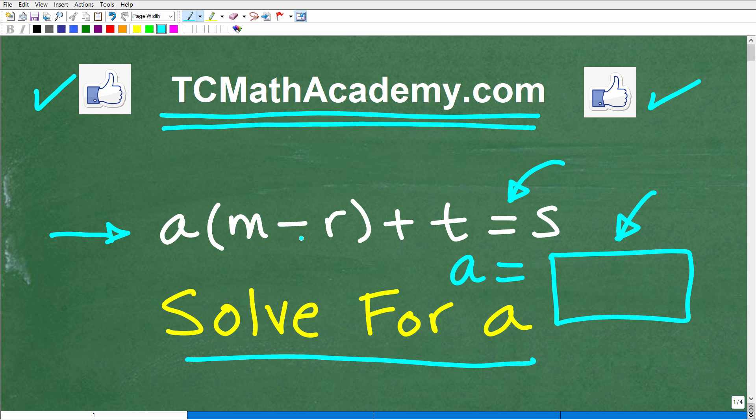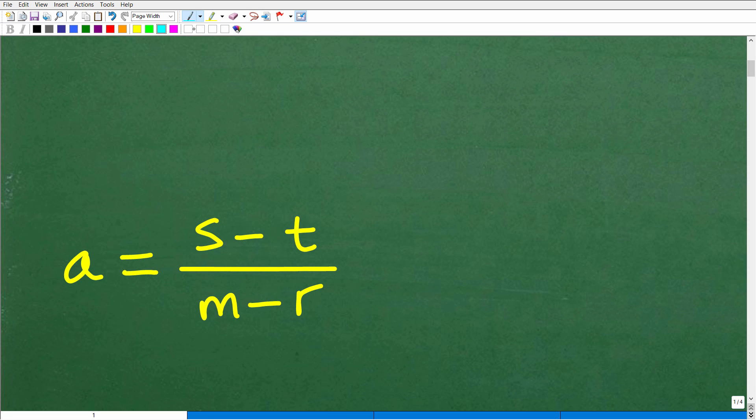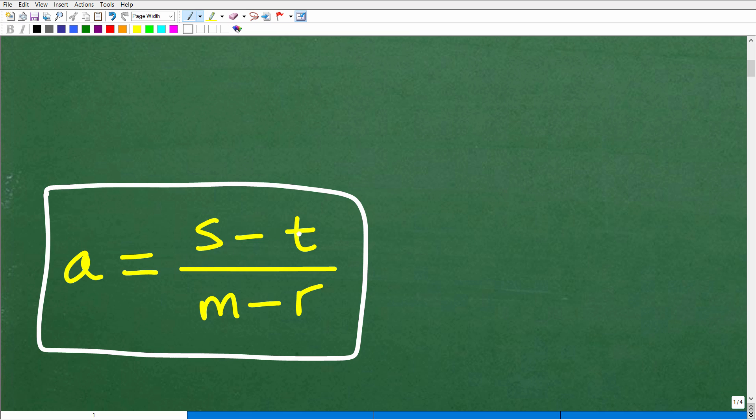Okay, so let's go take a look at the solution here. Again, we have a times m minus r, parentheses, plus t is equal to s. We want to rearrange this or write this in terms of a or solve for a. And the solution is the following. Here is the solution. A is equal to s minus t over m minus r.